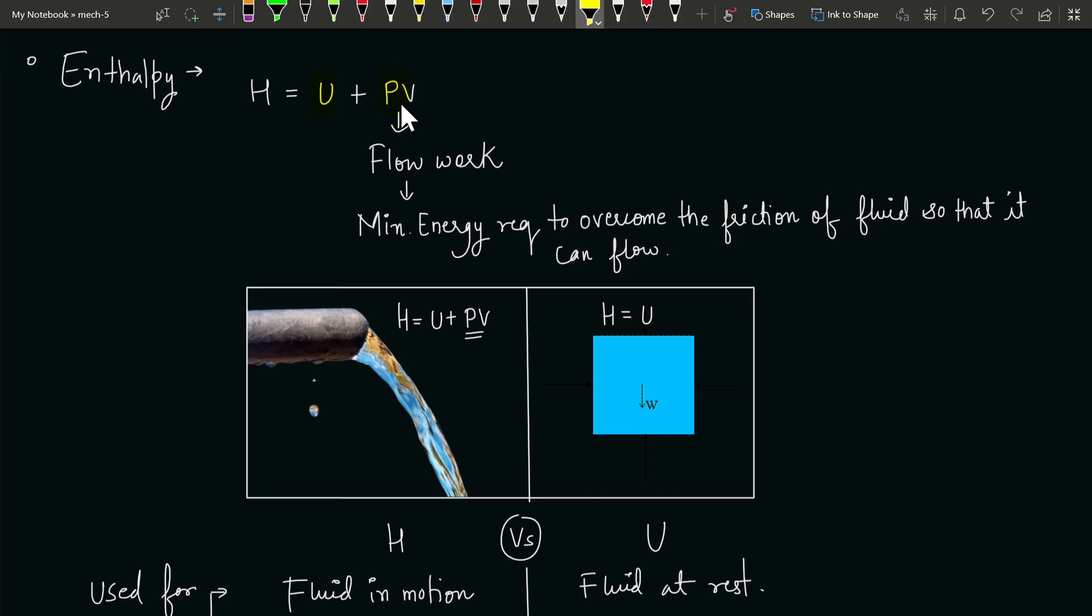This flow work is the external work or minimum energy required for a fluid to flow, in order to overcome the friction of the path through which the fluid flows.